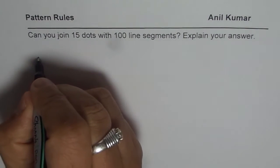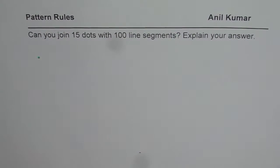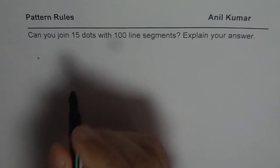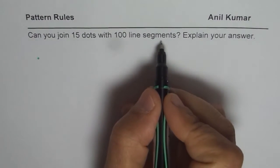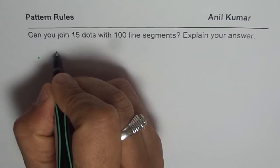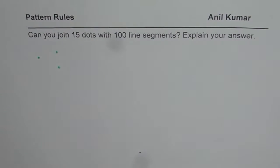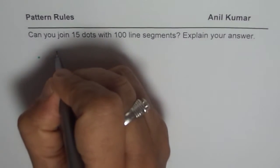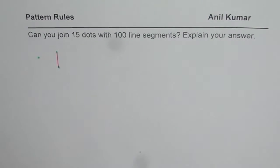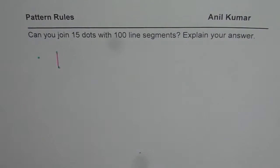If I have one dot, how many line segments do I need? None — because a line segment has to go through two dots. Now in the second case with two dots, I need exactly one line segment.